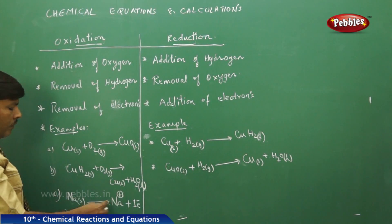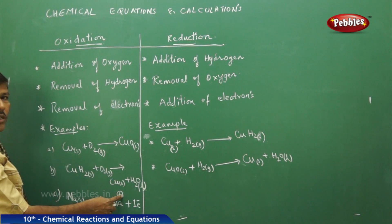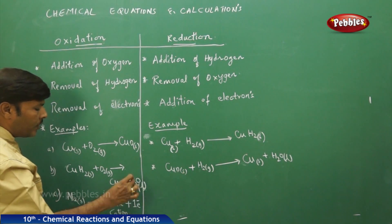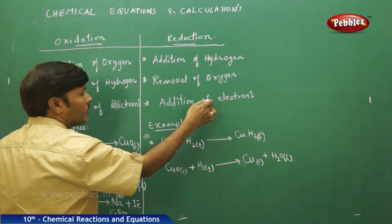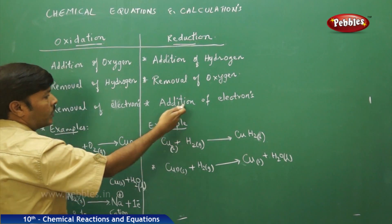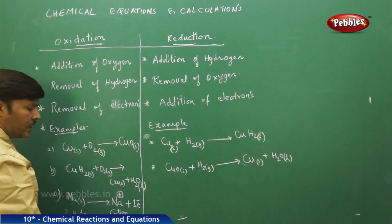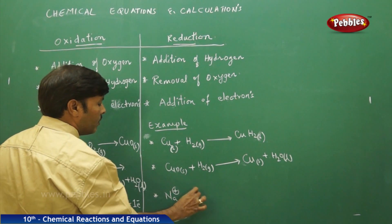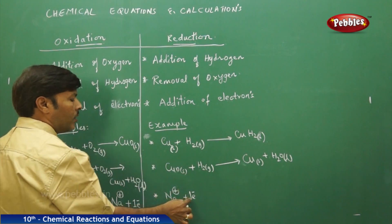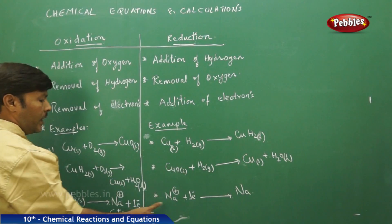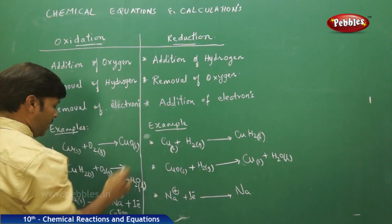Whatever number of electrons an element loses, that many positive charges that element acquires. The attainment of positive charge by an element is called a cation — so sodium becomes a sodium cation. To satisfy the condition of reduction, if you simply reverse this reaction, the condition of addition of electrons is automatically satisfied. The sodium cation carrying one unit of positive charge gains one electron and forms neutral sodium metal. By these examples, the last statement in both oxidation and reduction is satisfied.